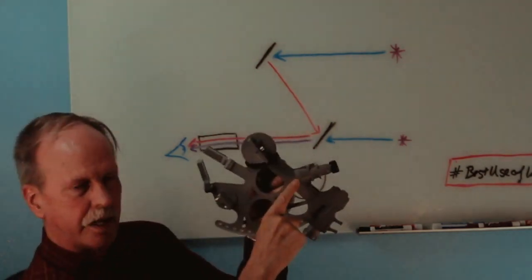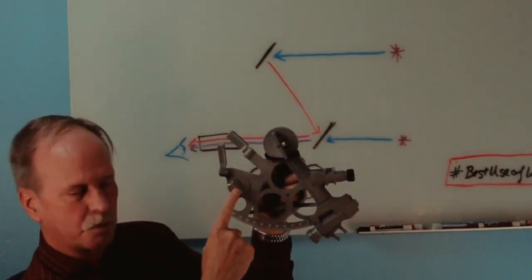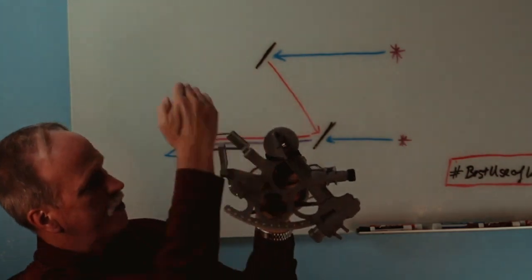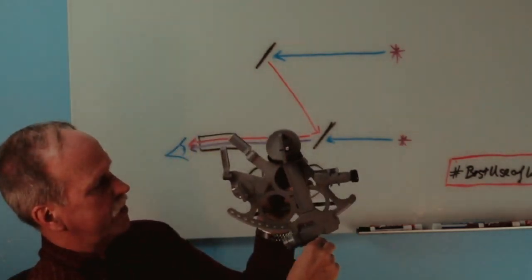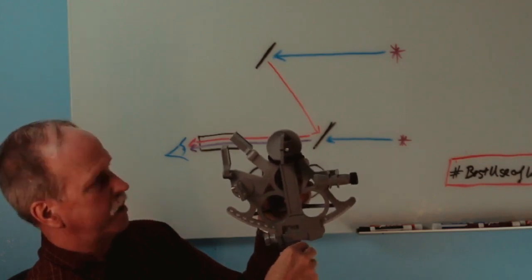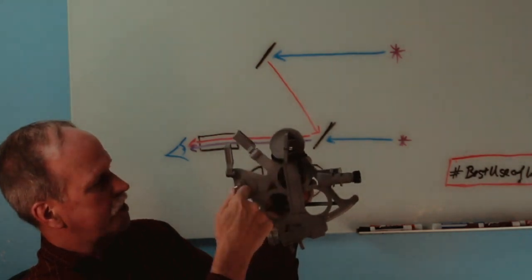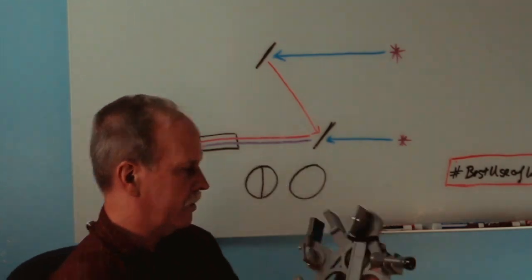Now, what happens with this? Say you're looking at the horizon of the ocean through the telescope and through this window on this partially silvered mirror. If you want to look at an object that's up in the sky, what you have to do is you have to bring this arm up until that object is reflected through this mirror, down to this mirror, and then back to your telescope. Let me show you what that looks like.